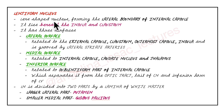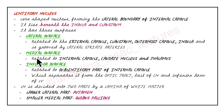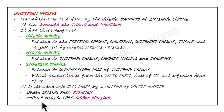To concise the important points under the lentiform nucleus: it is a lens-shaped nucleus forming the lateral boundary of the internal capsule, lying beneath the insula and claustrum. It has three surfaces. The lateral surface is related to the external capsule, claustrum, outermost capsule, and insula, and is grooved by the lateral striate arteries. The medial surface is related to the internal capsule, caudate nucleus, and thalamus. The inferior surface is related to the sublentiform part of the internal capsule, the tail of the caudate nucleus, and the inferior horn of the lateral ventricle. It is divided into the putamen (larger lateral part) and the globus pallidus (smaller medial part).